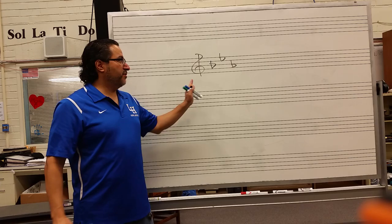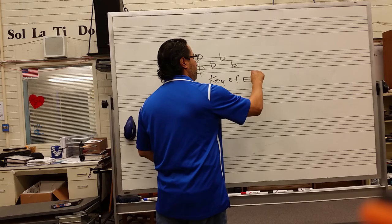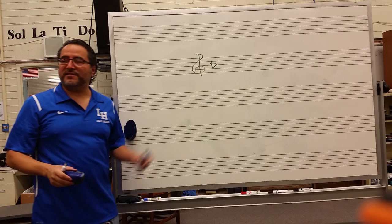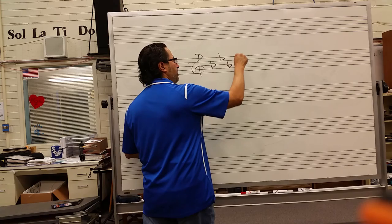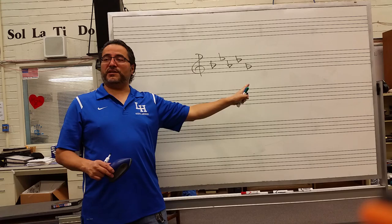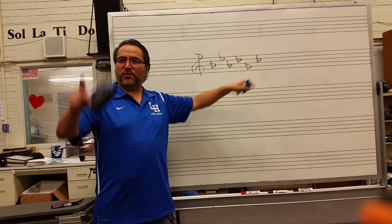Here's another way to memorize flat key signatures: the second to the last flat in the order is the key you're in. For example, if you see three flats and the second to the last is E flat, this is the key of E flat. The exception is one flat — the key of F — because there is no second to the last flat, so you simply memorize that. With five flats, the second to the last flat is D flat, therefore this is the key of D flat. With six flats, the second to the last is G flat, so that's the key of G flat.